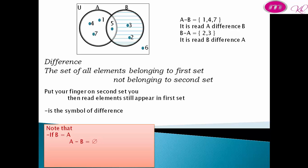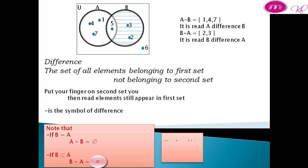Note that: if B equals A, then A difference B equals phi. If B is a subset of A, then B difference A equals phi. Also, U difference A equals complement of A, A difference U equals phi, and A difference A equals phi.